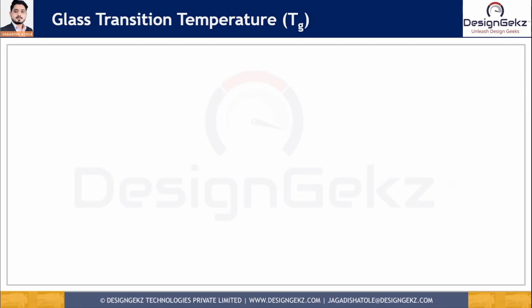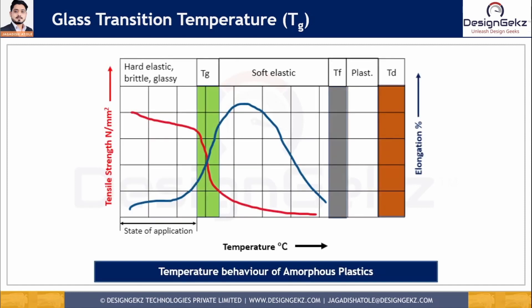Some polymers are used below their glass transition temperature and some are used above it. For amorphous plastics, the state of application is below Tg — going above Tg makes the amorphous plastic soft and flexible. Tf indicates flow temperature and Td is decomposition temperature. As temperature increases, tensile strength decreases, while elongation percentage initially increases and then decreases at higher temperatures.